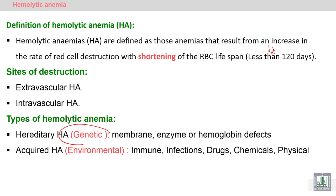Hemolytic anemia may be hereditary, due to genetic causes affecting the membrane, the enzyme responsible for metabolism of red blood cells, or the hemoglobin protein inside the red blood cells. It may also be due to environmental causes: exposure to antibodies, immune reactions, infections, drugs, chemicals, radiation, excess heat, or severe cold.